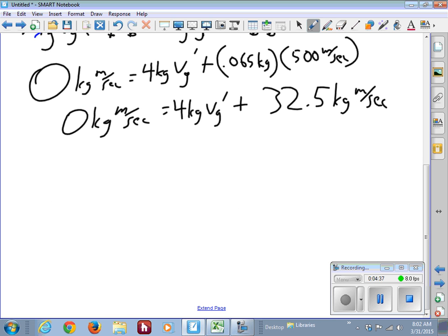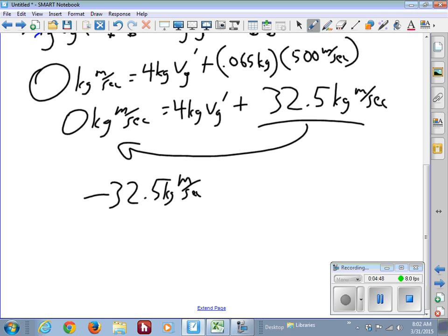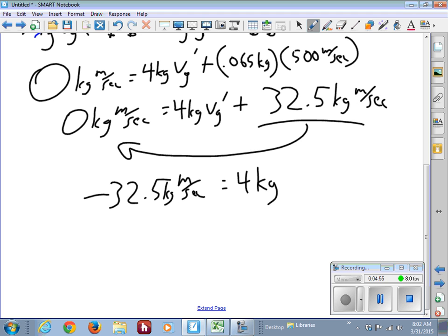Well, then the next step algebraically is to move this 32.5 over by subtraction. So you have negative 32.5 kilogram meters per second is equal to four kilograms times vg prime. And through the miracle of division, you divide both sides by four kilograms. And that gives you, for the vg prime, negative 8.125 meters per second.